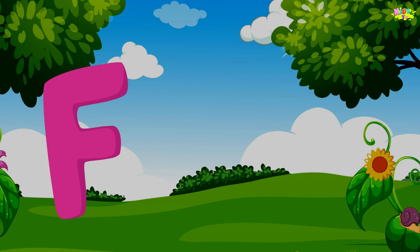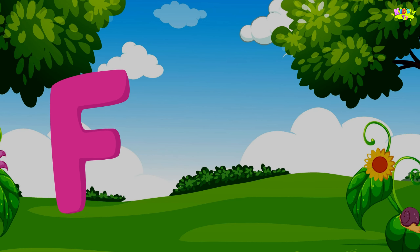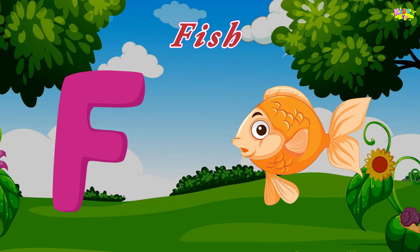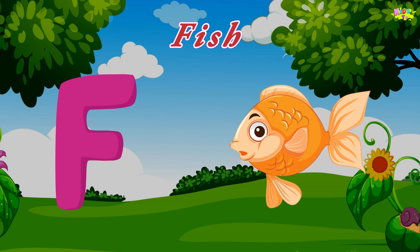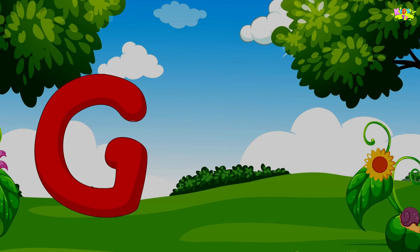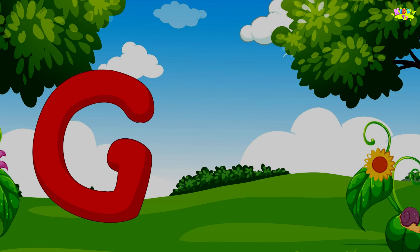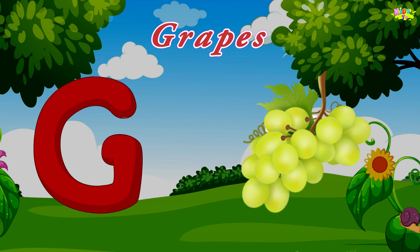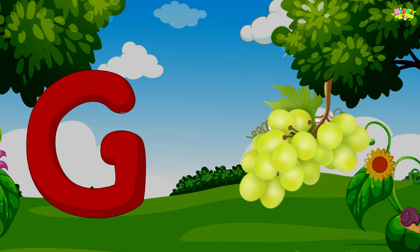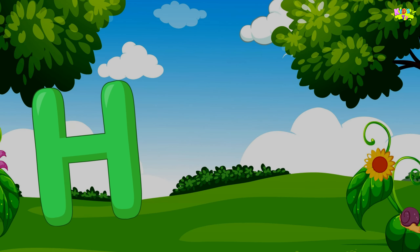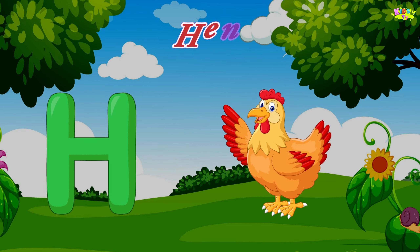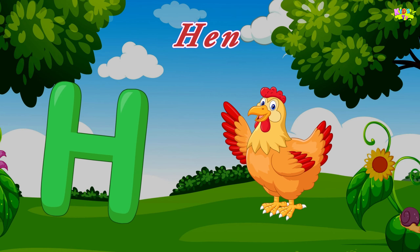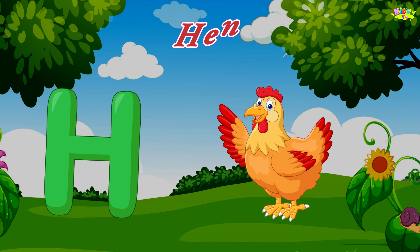F is for fish. F, F, fish. F, fish. F, fish. G is for grapes. K, K, grapes. K, K, grapes. G, grapes. H is for hen. H, H, hen. H, H, hen.